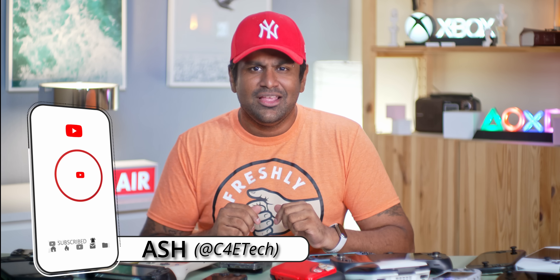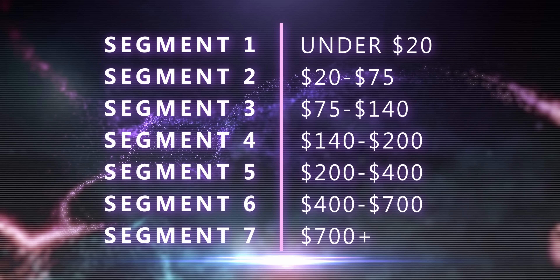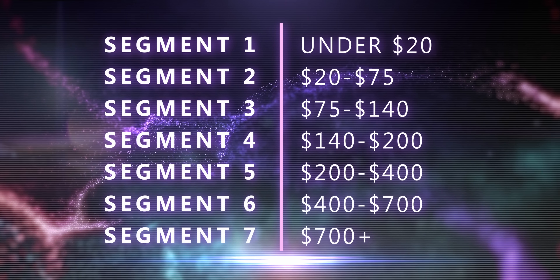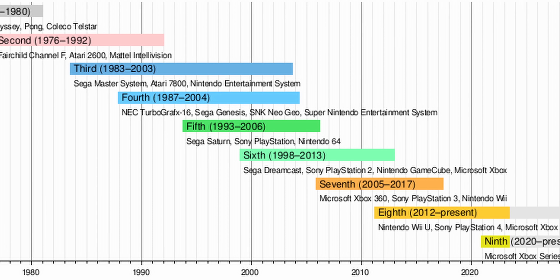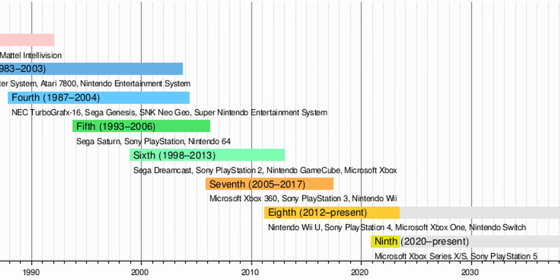For this video, the best way to go about it is sorting things by price. I have this divided into seven different price segments. But before we get to that, to understand gaming handhelds, you're going to have to understand a little bit of console gaming generations.